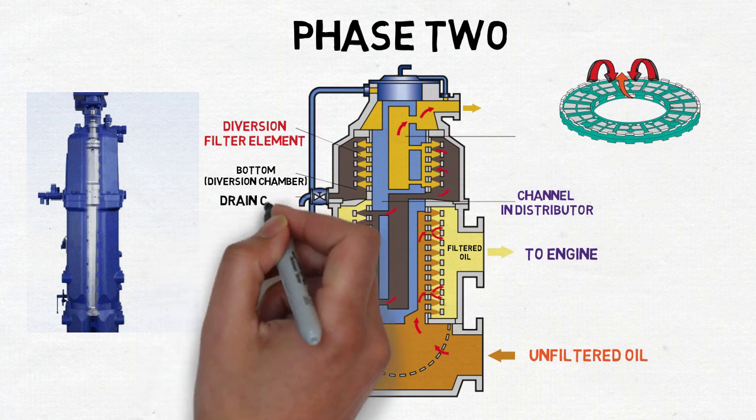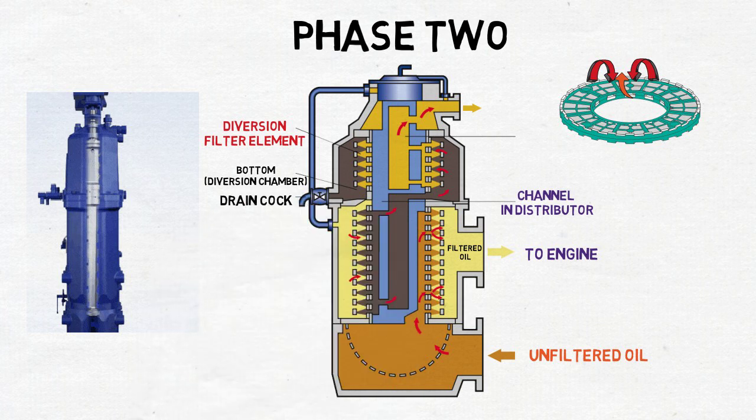The particles trapped by the filtering elements can thus settle to the bottom of the diversion chamber. The solids filtered out in the diversion chamber are then discharged from the system by periodic drain by the drain cock.